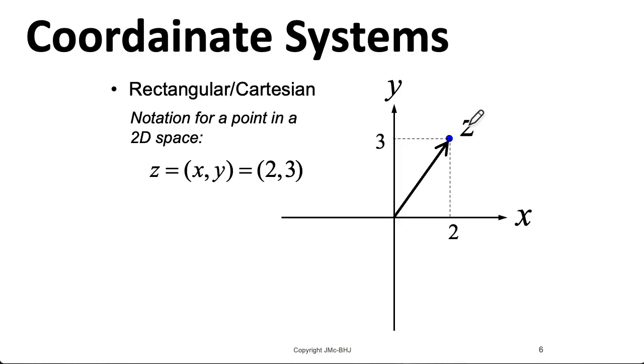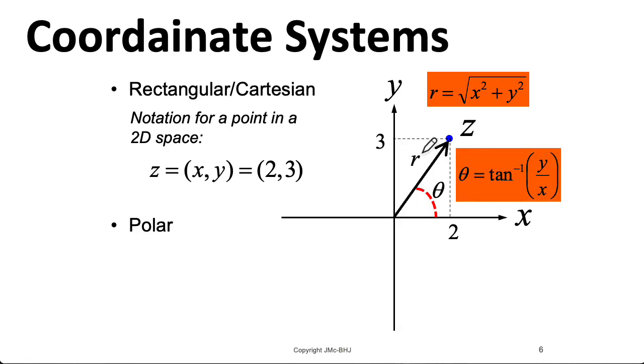In addition to thinking about Cartesian coordinates, it's often convenient to express complex numbers in terms of a polar coordinate system. Here we have an angle theta and a magnitude r. The magnitude is just the length of this vector, so we can convert from Cartesian to polar coordinates by squaring the real part, squaring the imaginary part, adding them and taking the square root.